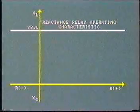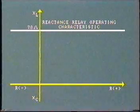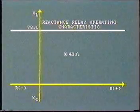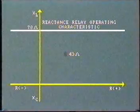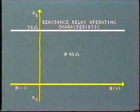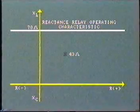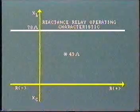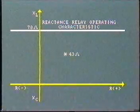If a ground fault occurs halfway along the transmission line, the relay will detect the decrease in value of reactance to 43 ohms and operate the tripping contacts. It will not be affected by resistance in the arc.